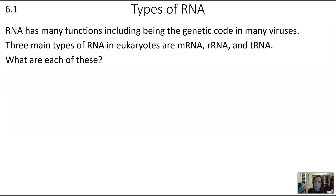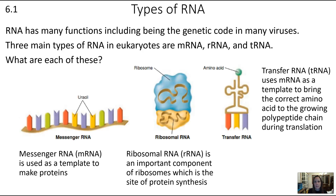RNA has many functions besides serving as the genetic code in many viruses. Three main types of RNA in eukaryotes are mRNA, rRNA, and tRNA. Messenger RNA (mRNA) is used as a template to make proteins — DNA is transcribed into mRNA, which is then translated into protein. Ribosomal RNA (rRNA) is an important component of ribosomes, where protein synthesis occurs. Transfer RNA (tRNA) brings the correct amino acid to the growing polypeptide chain during translation.